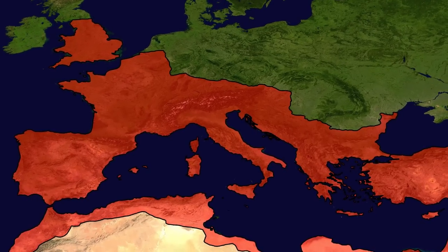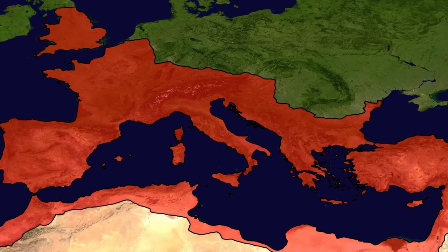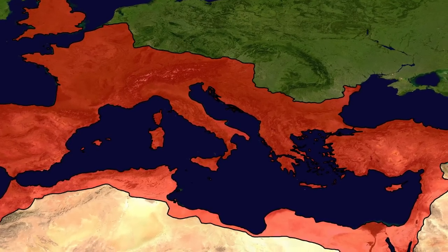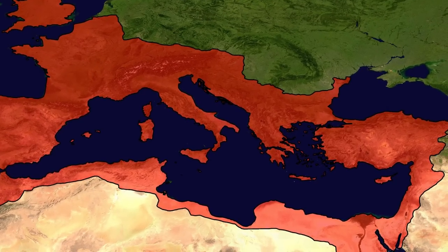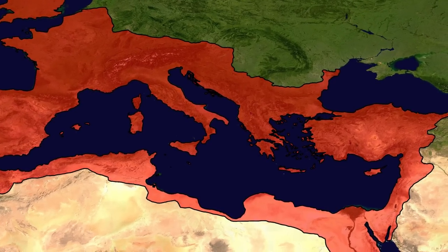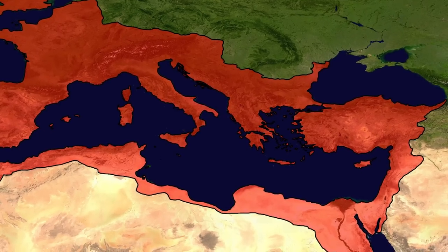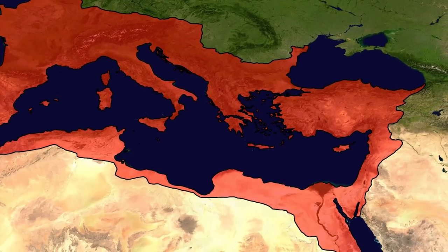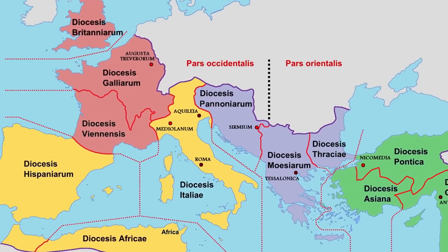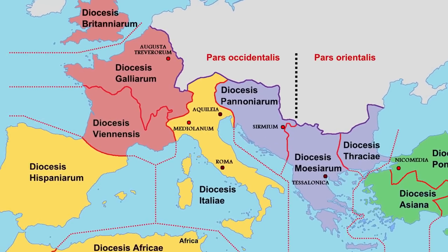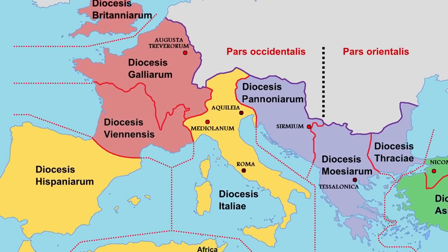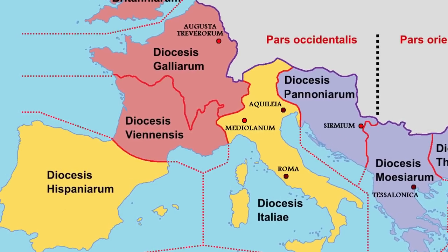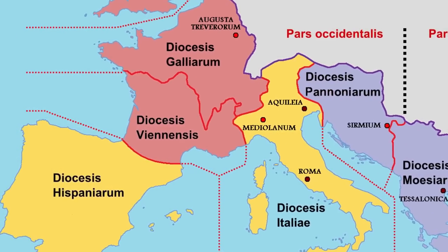Change did not escape the outlook of the provinces either. Following the Roman conquests, the local elites in the provinces went through a process of Romanization, and by the 4th century the elites of Gaul, Hispania, and North Africa considered themselves true Romans and were loyal subjects of the empire. Nonetheless, this loyalty had its limits, as their wealth and status derived from their extensive landholdings, secured by Rome's ability to protect their property.